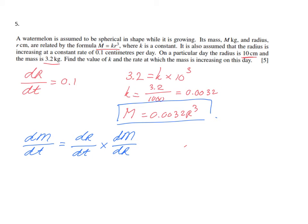dr/dt is 0.1, so let me write it down: 0.1 times dm/dr.